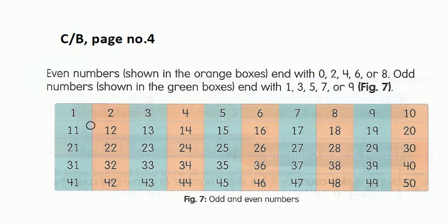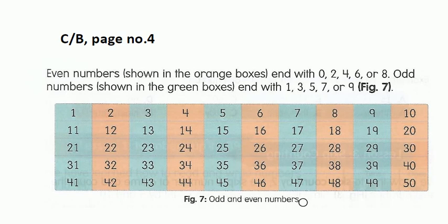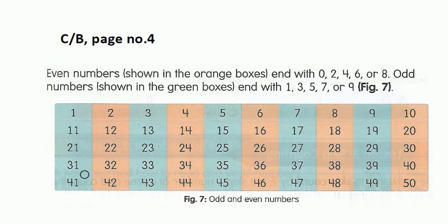Now in the green box, the numbers ending with 1, 3, 5, 7, or 9 are odd numbers. So the numbers in the orange box are even numbers, and the numbers in the green box are odd numbers.